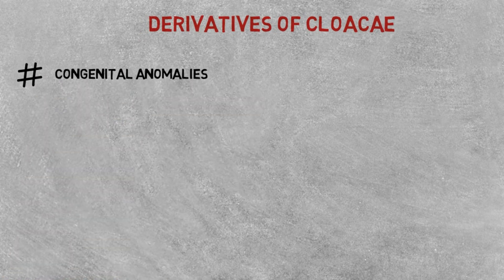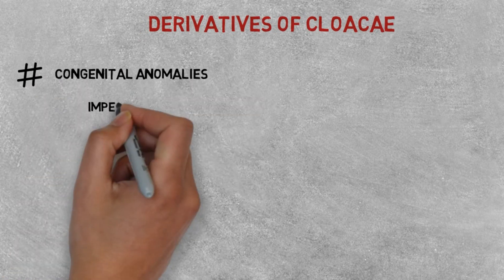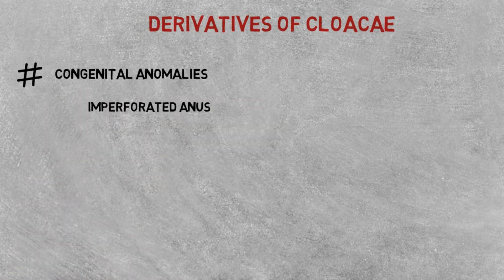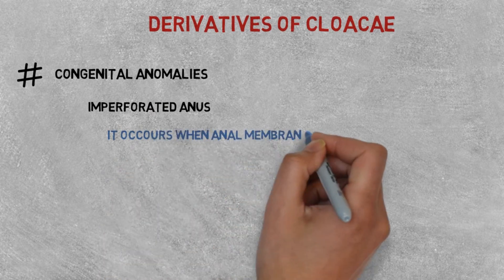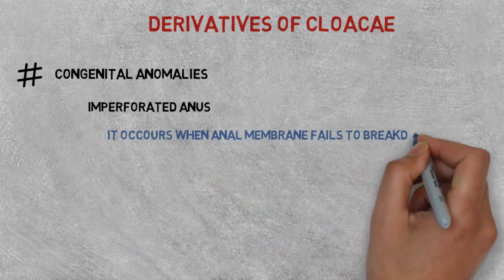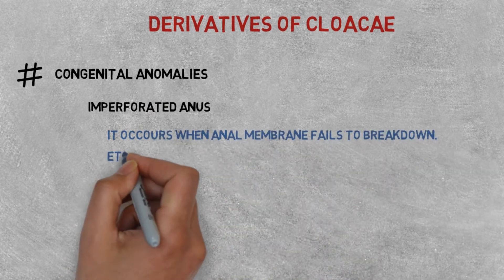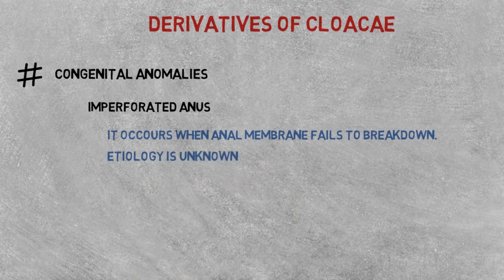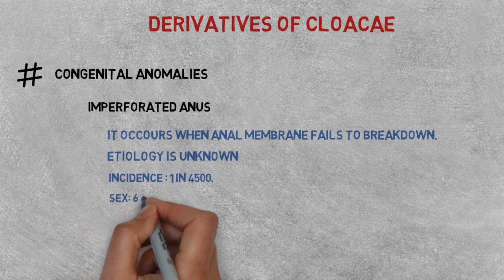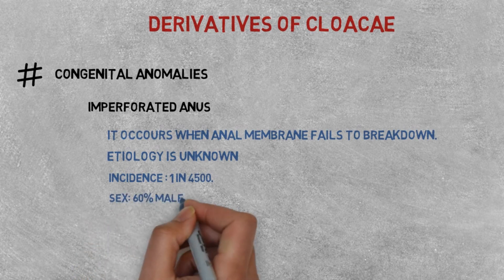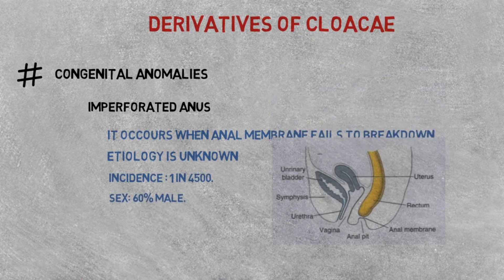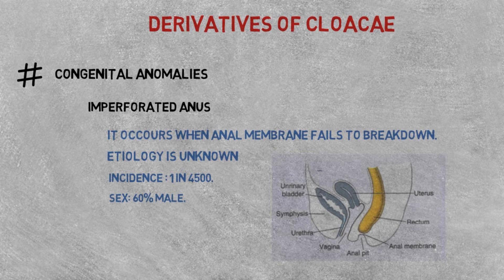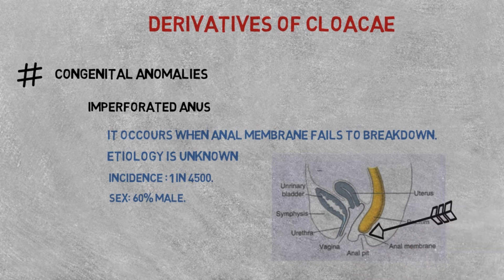The second congenital anomaly is imperforated anus. It occurs when the anal membrane fails to break down. Its etiology is unknown, the incidence is 1 in 4500, and 60% of those affected are male. As seen in the diagram, the arrow represents improper fusion between the anal pit and the rectum.